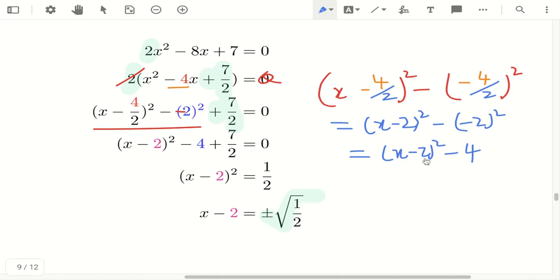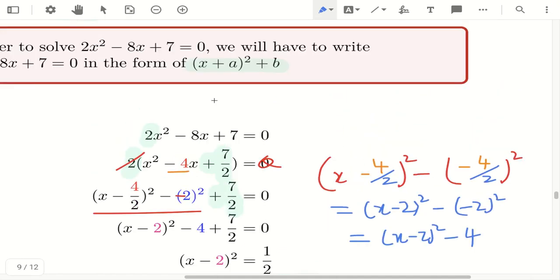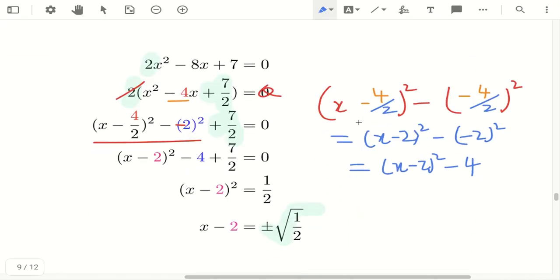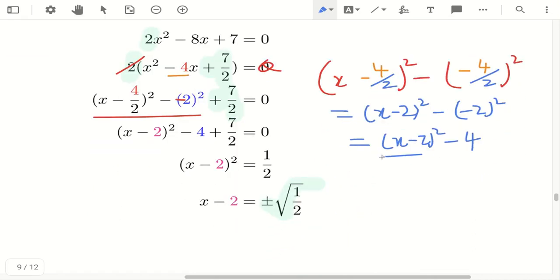So why am I doing this? Because completing the square requires to write it in something bracket square, x minus a or x plus a something square. So this is why I'm doing this, so I can get this.